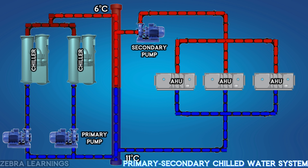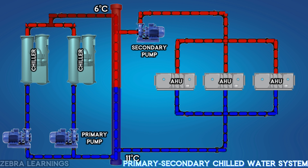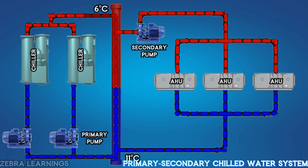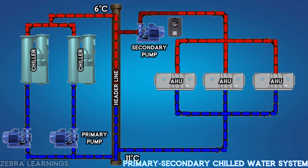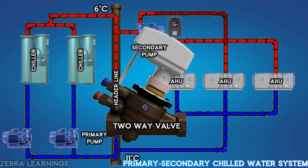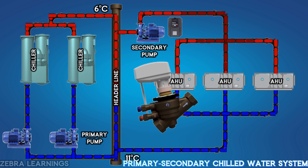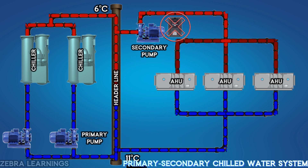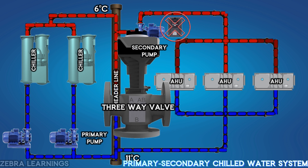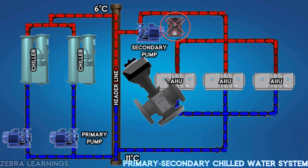There are two separate chambers in the header line, so the water from the chiller and the water from the AHU do not mix. If a VFD is used in the secondary pump, a two-way valve is used in the AHU. If a VFD is not used, a three-way valve is used in the AHU.